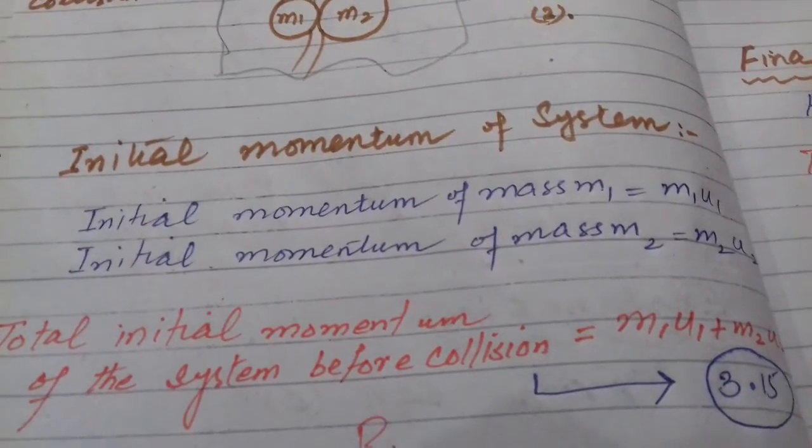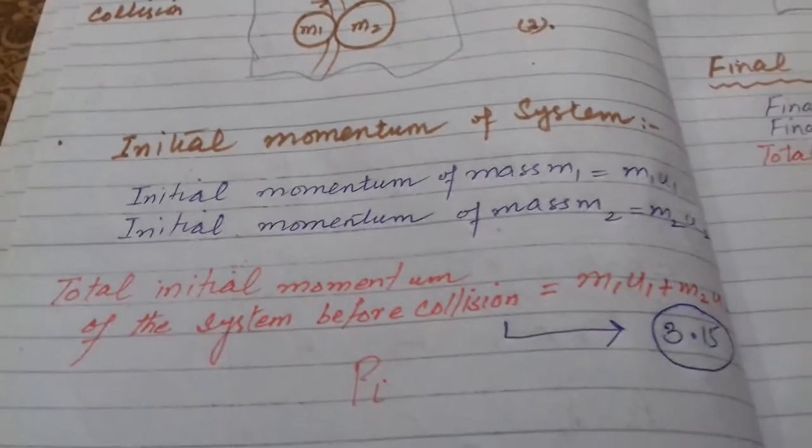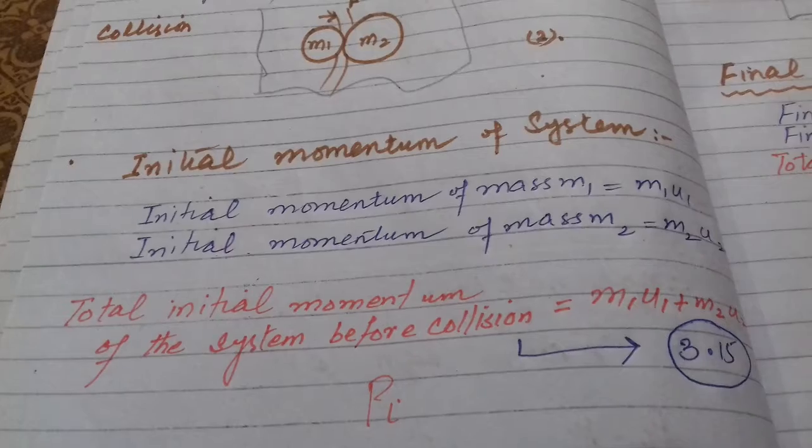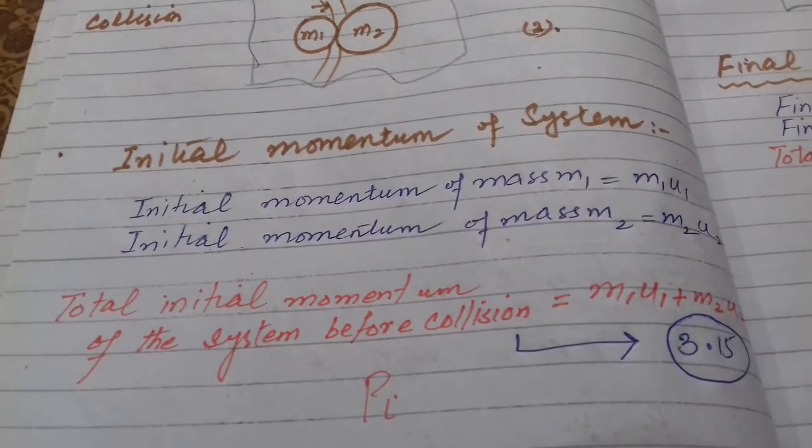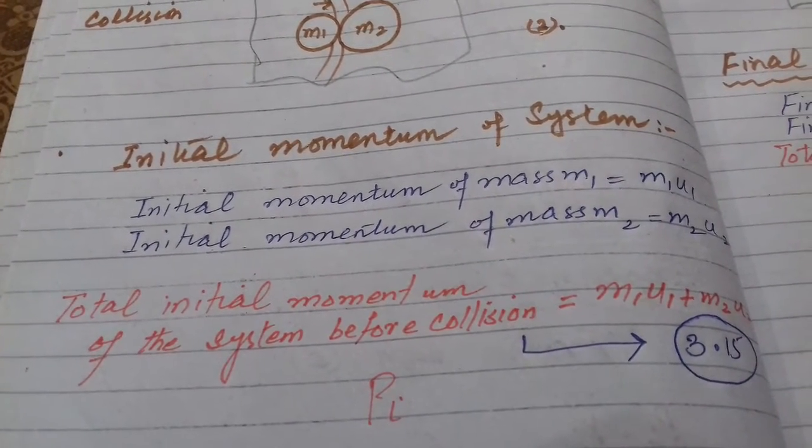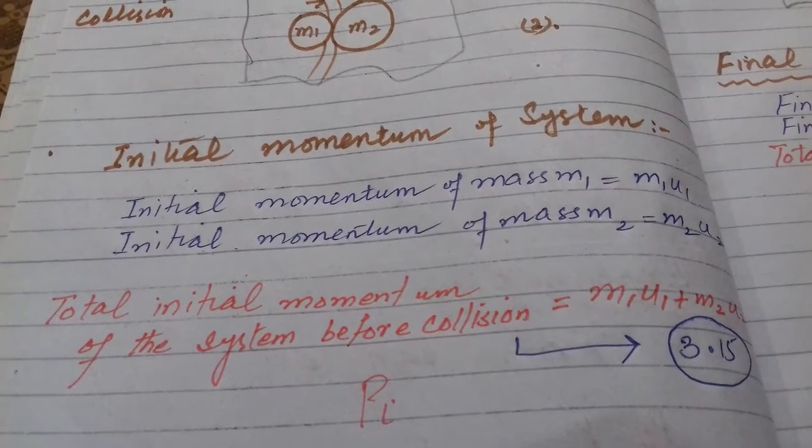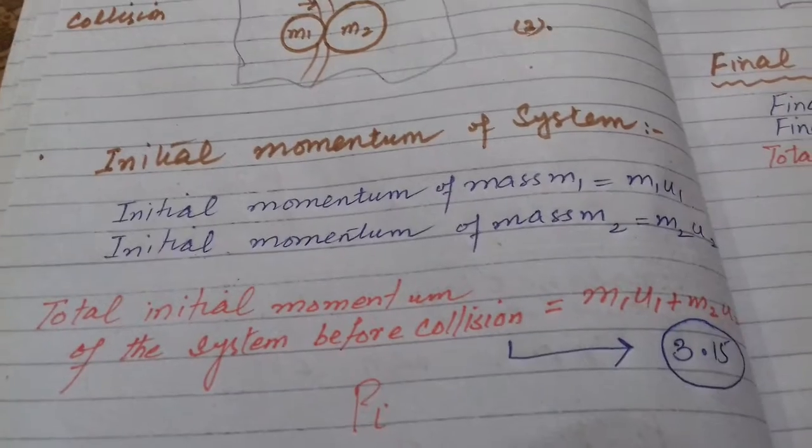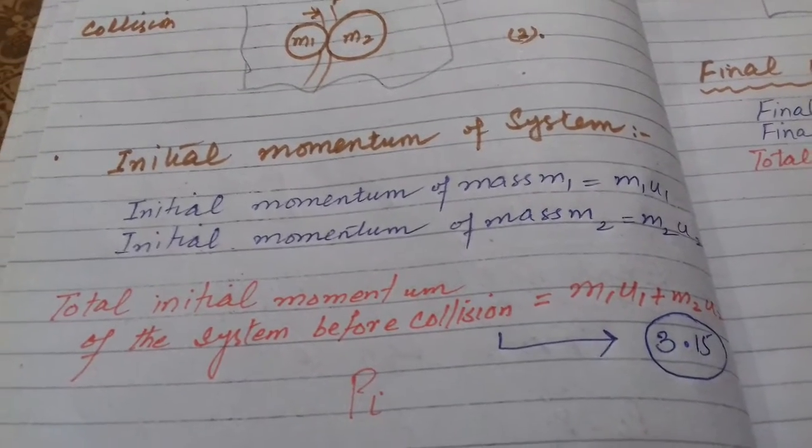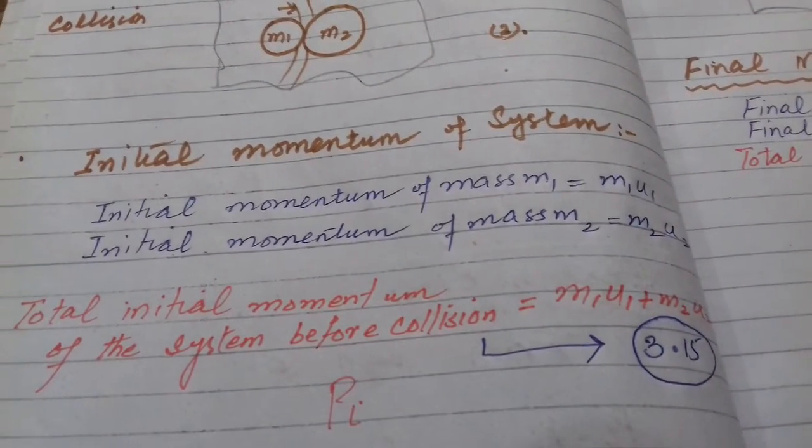First we calculate the initial momentum of the system. Initial momentum of sphere M1 is M1U1. You know that momentum is a product of mass and velocity. Initial momentum of mass M1 is equal to M1U1. Initial momentum of mass M2 is M2U2.